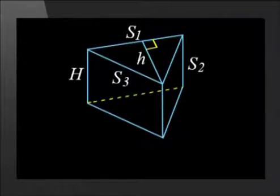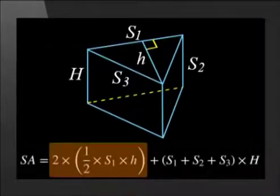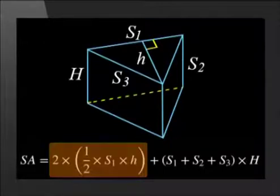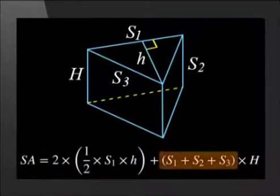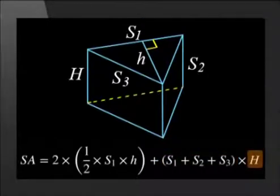Or, 2 times half of side 1 times the perpendicular height, plus side 1 plus side 2 plus side 3, times h, which is the height of the prism.